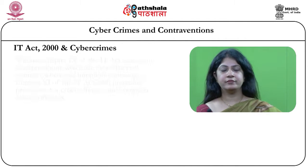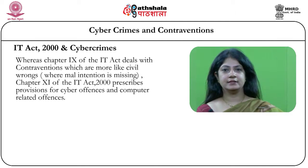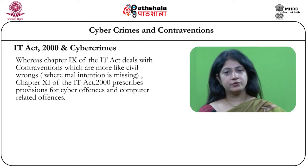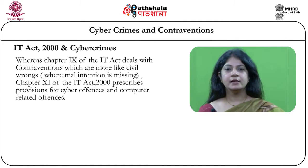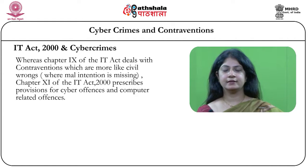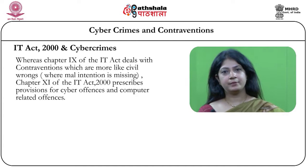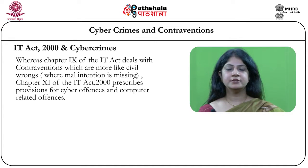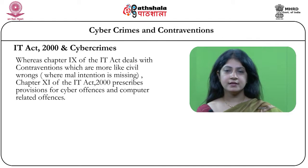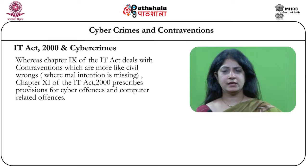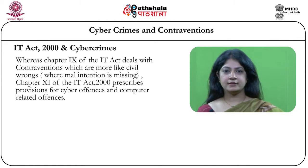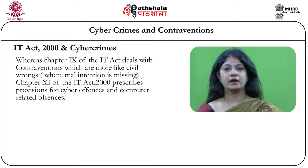If we look at the IT Act, Chapter 9 talks about civil wrongs which are contraventions, and cyber crime is covered by Chapter 11 of the IT Act. The basic difference is that where there is malintention, cyber crime gets involved; whereas where there is no malintention but perhaps negligence causing an act that results in loss to someone, entitling the victim to seek compensation, that falls under Chapter 9 of the IT Act.